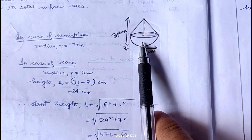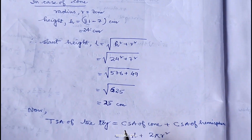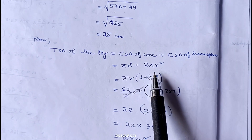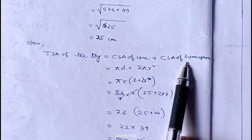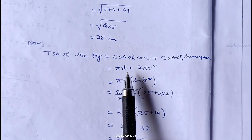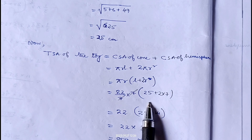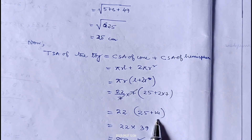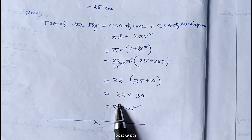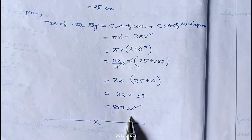The slant height of the conical part is 25 centimeter. Now, total surface area of the toy is curved surface area of cone plus curved surface area of hemisphere: pi r l plus 2 pi r squared. Taking pi r common, we get pi r into (l plus 2r). Pi is 22/7, radius is 7, l is 25, so 22 into (25 plus 14) equals 22 into 39, which is 858. Therefore total surface area of the toy is 858 centimeter square.